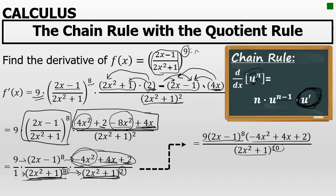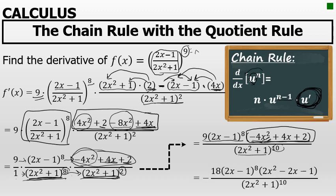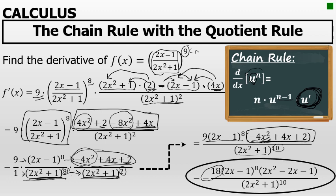The final thing I'll do is notice that in the third factor in the numerator there's a common factor of 2. Because the term with the highest degree is typically written with a positive coefficient, I'm going to factor a negative 2 out of negative 4x squared plus 4x plus 2. When I factor out negative 2, I'm left with 9 times negative 2, which is negative 18. I put the minus sign in front of the fraction, times 2x minus 1 to the eighth power, times the result of factoring out negative 2, leaving 2x squared minus 2x minus 1, all over 2x squared plus 1 to the tenth power. The derivative of f of x is equal to negative 18 times the quantity of 2x minus 1 to the eighth, times the quantity of 2x squared minus 2x minus 1, all over the quantity of 2x squared plus 1 to the tenth power.